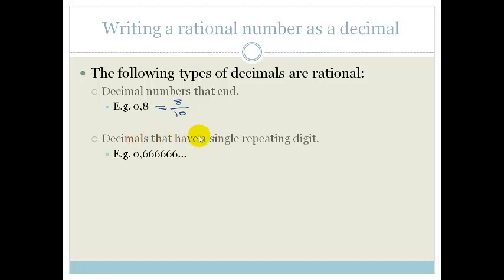Another example is decimals that have a single repeating digit. For example, 0.66666. The reason for this is because this is actually equal to 2 over 3. If you put 2 over 3 in your calculator, you will get 0.66666. Depending on your calculator, the last number might be a 7 because they are rounding up. That's the same as 0.33333 is the same as 1 third. Decimals that have a single repeating digit are also a rational number.